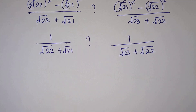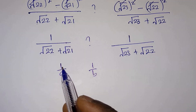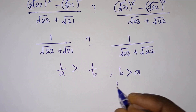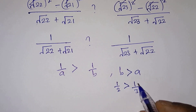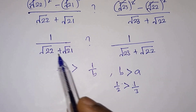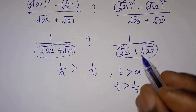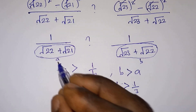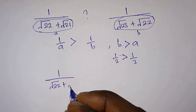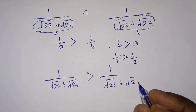So which one is greater? Let's think about 1/a versus 1/b: 1/a is greater than 1/b provided b is greater than a. For example, 1/2 is greater than 1/3 because 3 is greater than 2. Since the numerators are both 1, we compare the denominators. √23 plus √22 is greater than √22 plus √21, so that is b and this is a. Since b is greater than a, 1 over (√22 plus √21) is greater than 1 over (√23 plus √22).